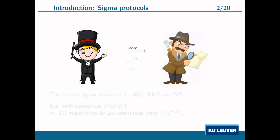The zero-knowledge proofs in this video are examples of sigma protocols. Sigma protocols have a three-round structure that is started by the prover, who sends a commitment to the verifier. Then the verifier sends a challenge back to the prover, and finally the prover sends a response. The verifier will then either accept or reject the proof.